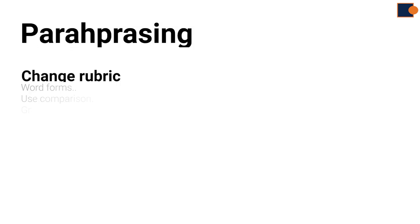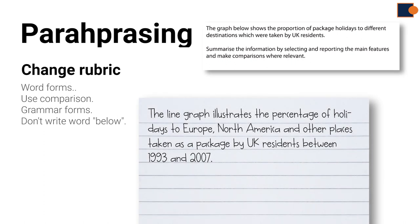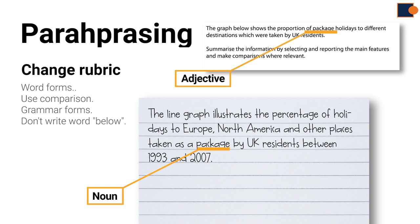The next step is paraphrasing. Here you need to write the first paragraph of the essay by changing the rubric. You can change the rubric by changing word forms. For example, in this sample you can see the word 'packaged' written as a noun while it is used as an adjective in the rubric.